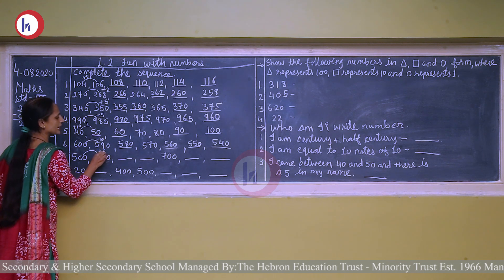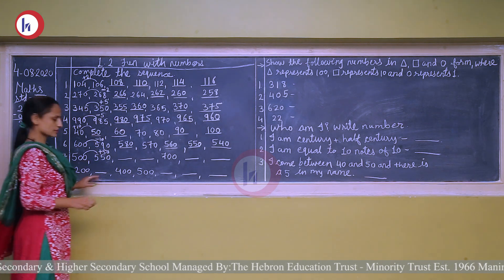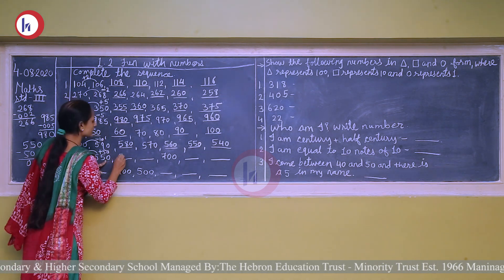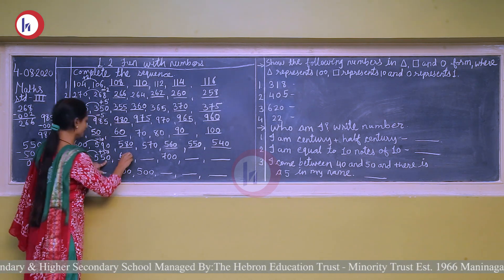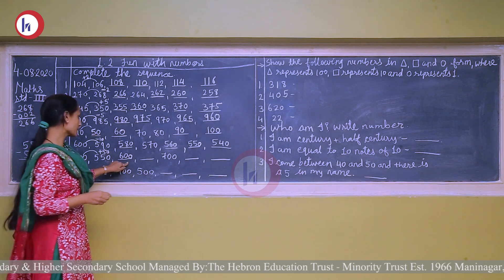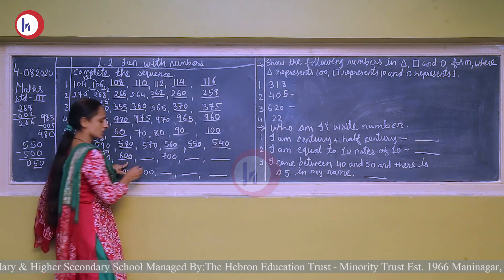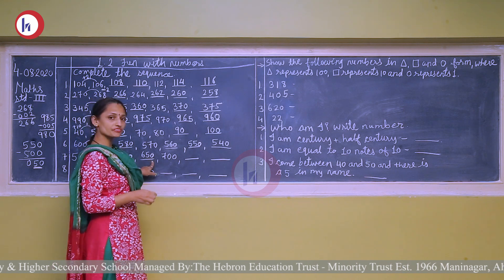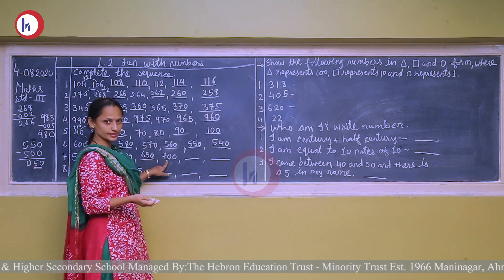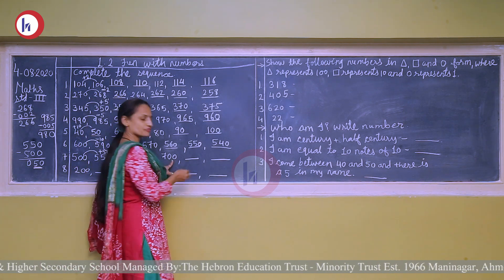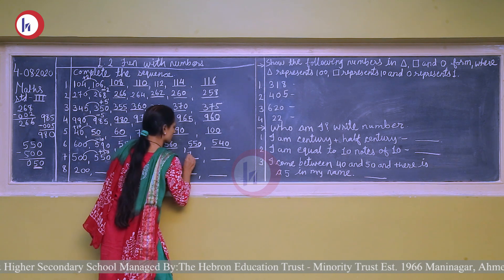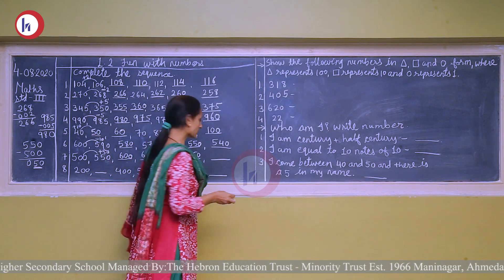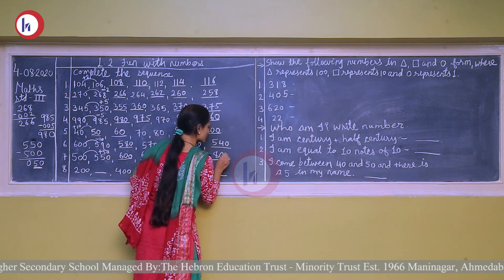So we will add 50 each time. 550 plus 50 is 600. 600 plus 50 is 650. 650 plus 50 is 700, which is given. 700 plus 50 is 750. Again add 50, we get 800.